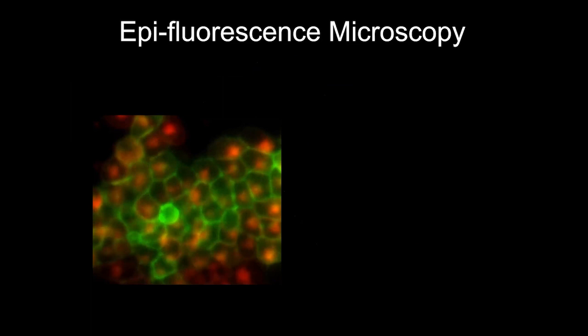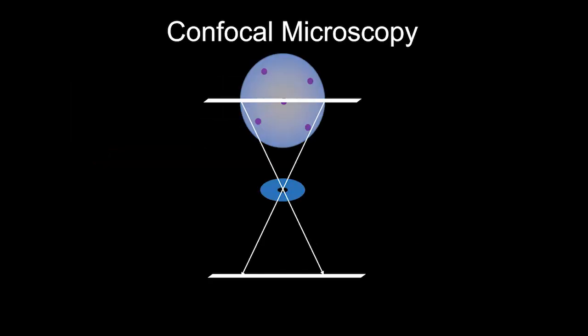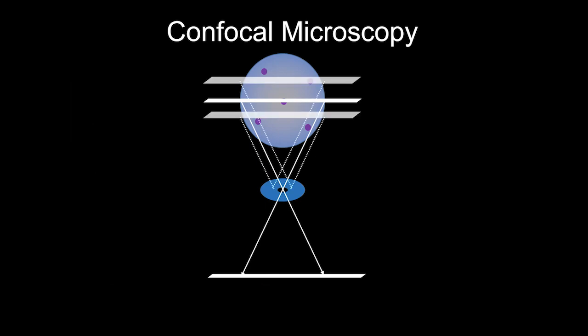In confocal microscopy, a disc with a pinhole is placed in the light path. Light from out-of-focus planes hits the disc and doesn't make it through. Only light from the focal plane — a little above and below — passes through to the camera, giving you a really thin, crisp, clear optical section, assuming everything is set up properly.